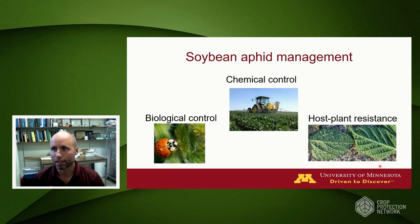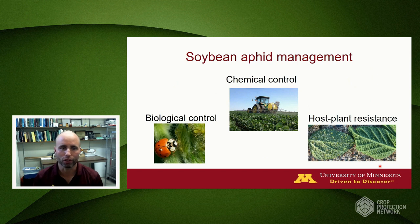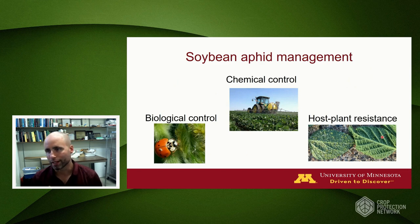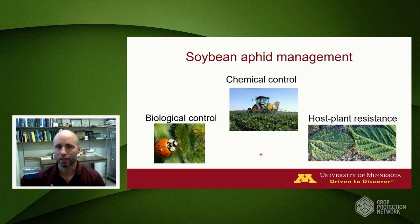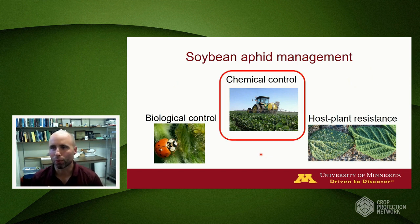Stepping back and thinking about soybean aphid management, we like to talk about it in terms of integrated pest management—bringing together and integrating different management tactics. Ideally we'd be relying on biological control, which includes predatory insects or parasitic insects. We'd also be incorporating pest-resistant varieties, called host plant resistance. Unfortunately for soybean aphid, our integrated pest management programs are still very heavily reliant on chemical control. We're not at a point yet where we're very effectively integrating a lot of other tactics.